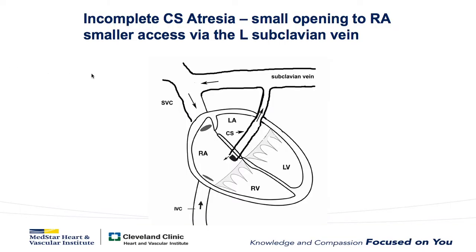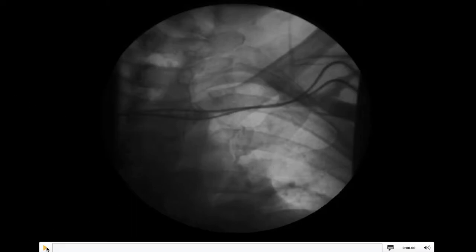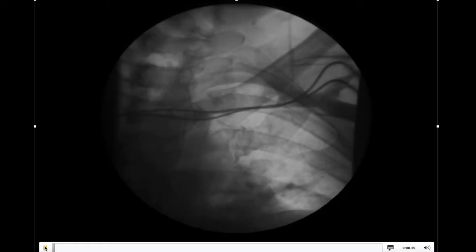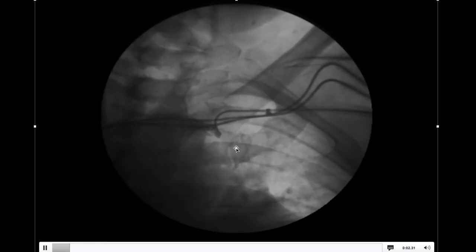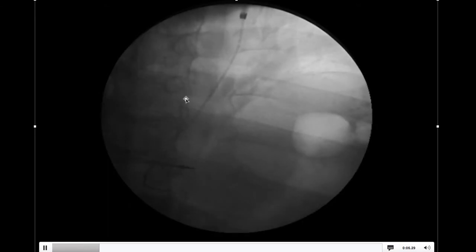If you have incomplete CS atresia — that is, some of the blood return goes from the coronary sinus back into the right atrium — then the amount of blood return that goes back to the venous Marshall is going to be less, and the size of the vein of Marshall will be smaller. As illustrated in this case, where we're not able to find the CS, and you'll notice this time the vein of Marshall is smaller.